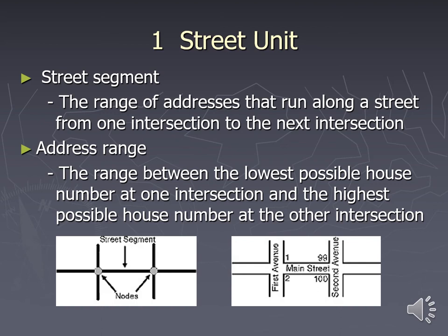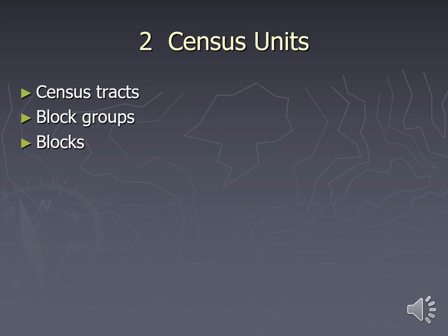The two main things when dealing with census data are the relationship units that make up the structure. First, you have your street segment, which is the range of addresses that run along a street from one intersection to the next — it runs on a node system. Like vector topological structure, census data uses the same idea: a line segment is essentially your block, and an intersection of roads is where the node meets. Then you have the address range — the numerical range of the lowest house number at one intersection and the highest at the other, accounting for total addresses on that line segment.